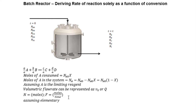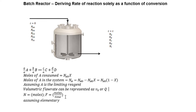Just to remind you and not to confuse you, you might see me using Q or V with subscript O — that's simply the volumetric flow rate. N is simply the moles, and F is for a continuous state tank reactor where moles can be represented in the form of time.